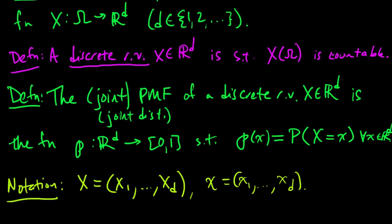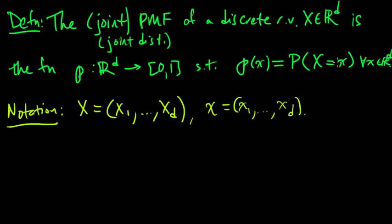And so if we write, like in the definition here, when I write X equals x, that means that X_i equals little x_i for each i, each i from 1 to d. So it's equal on the coordinates.